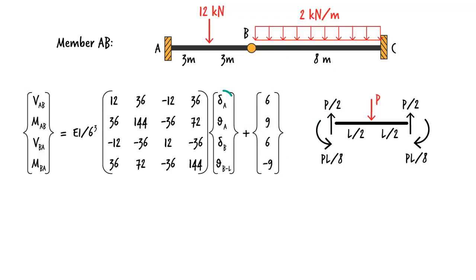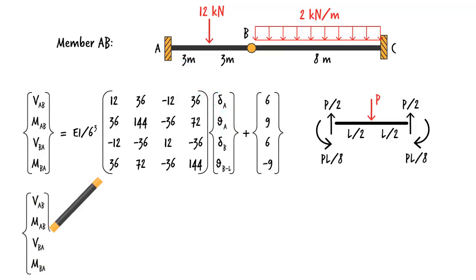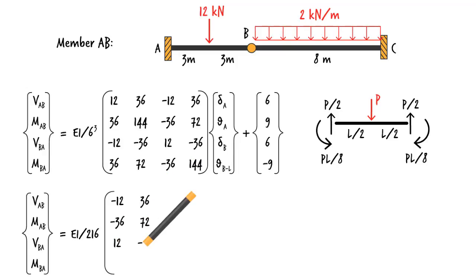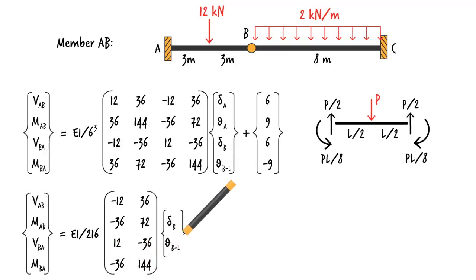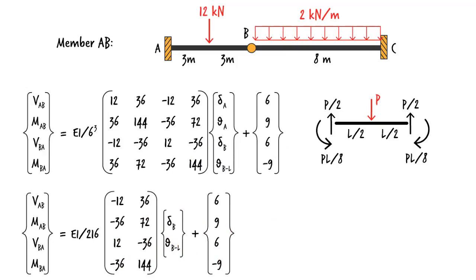Since delta A and theta A are zero at the fixed support, we can simplify the equations this way.